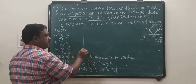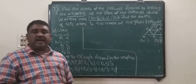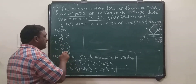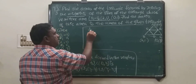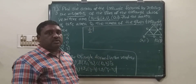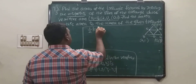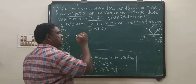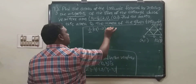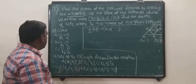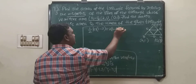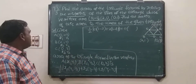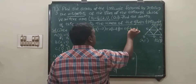First find out area of triangle ABC. First point x1, y1. Second point x2, y2. Third point x3, y3. Then substitute: half modulus of x1 into (y2 minus y3). What is x1? 0. Y2 minus Y3: what is y2? 1. Minus y3? 3. Plus x2, which is 2, into (y3 minus y1): y3 is 3, minus (-1). Plus x3, which is 0, into (y1 minus y2).